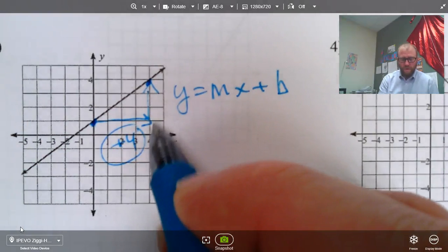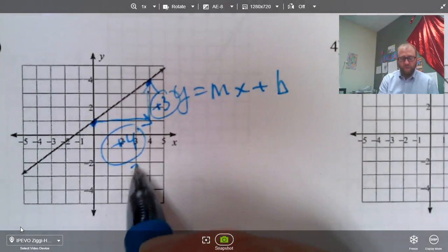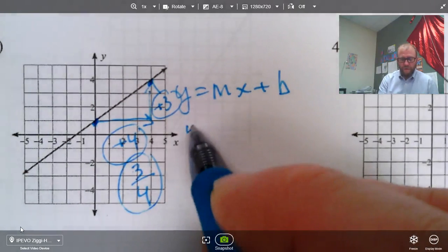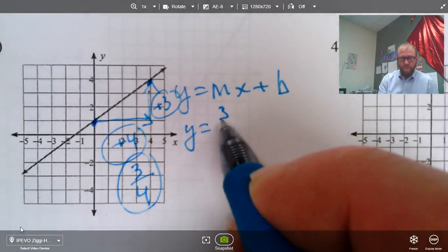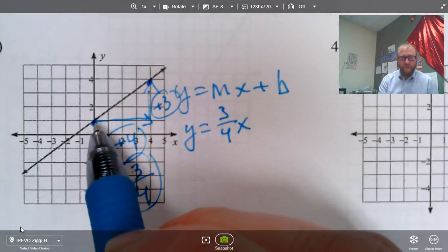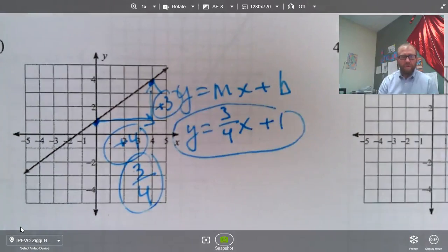Four forward, up three, so our slope, rise over run, three-fourths. So y equals three-fourths x, and our y-intercept, the place where the line crosses the y-axis, looks like it's positive one. There we go.